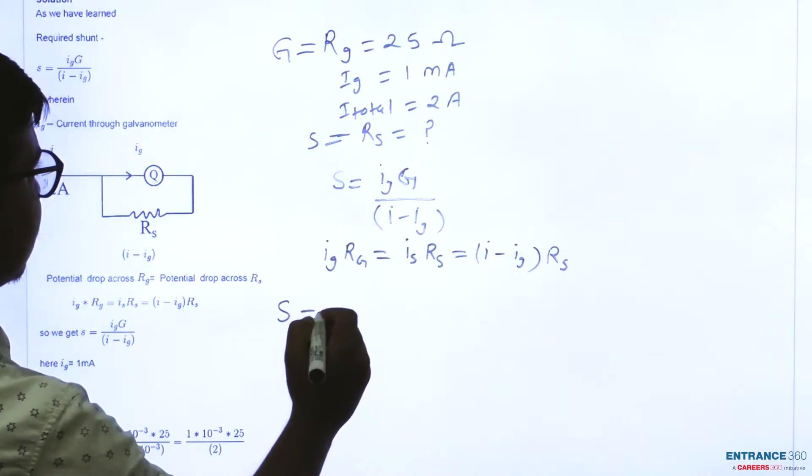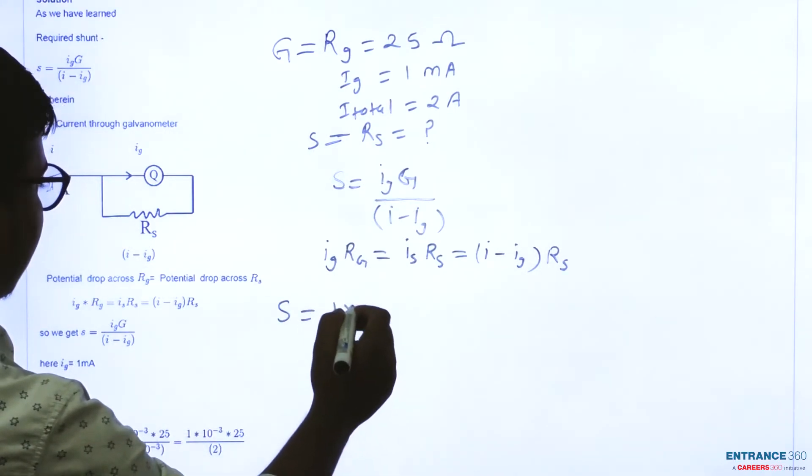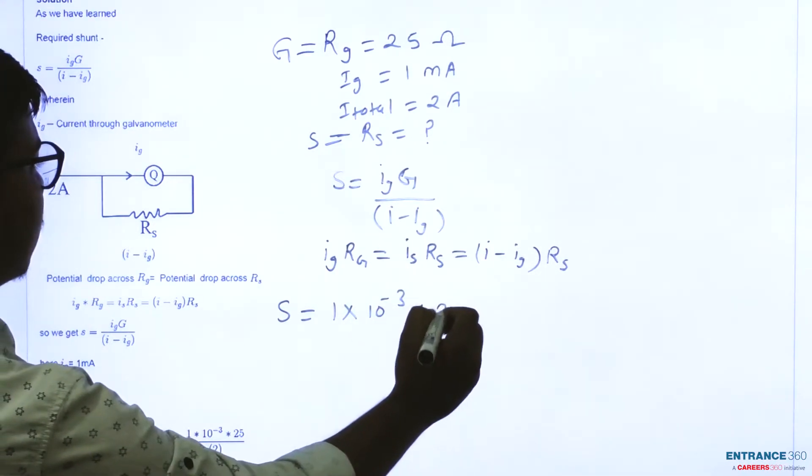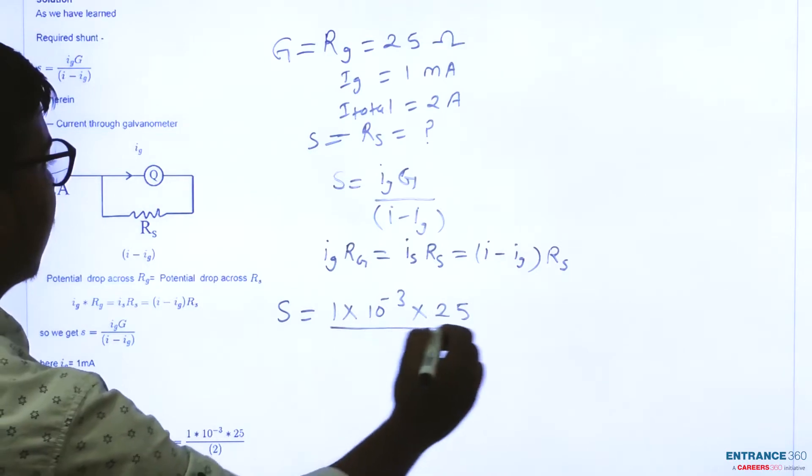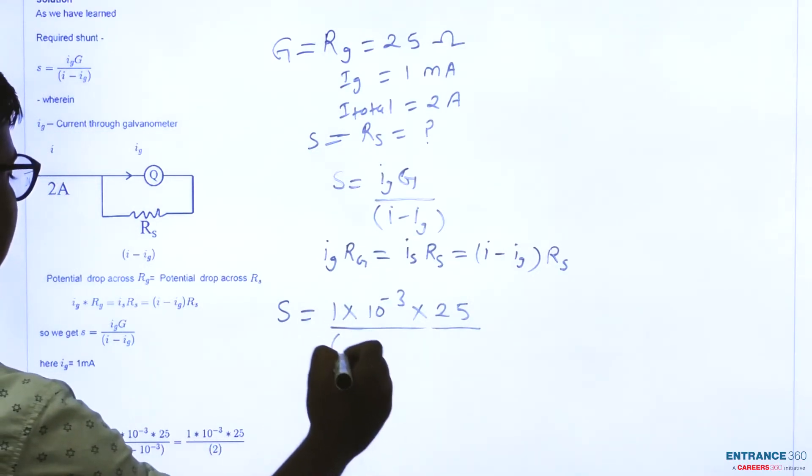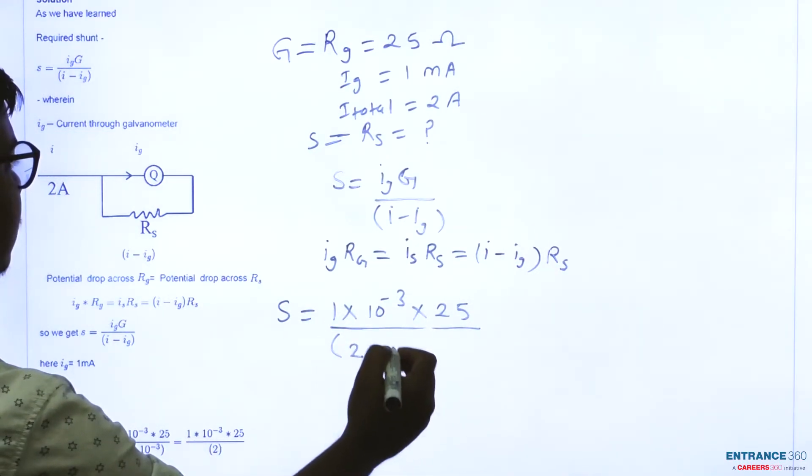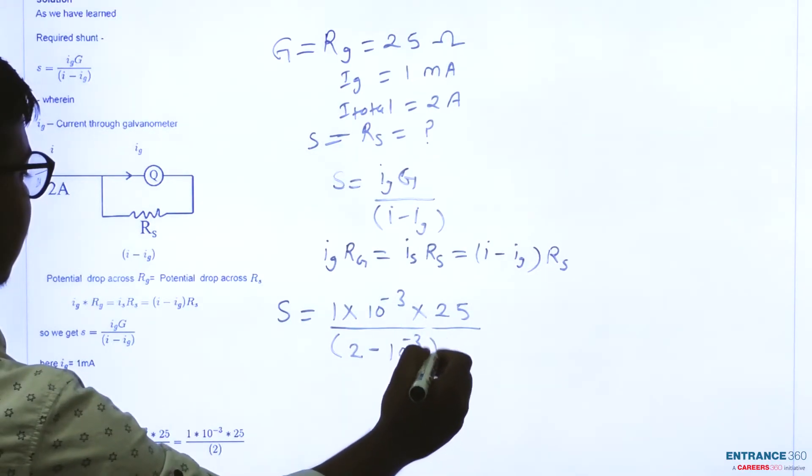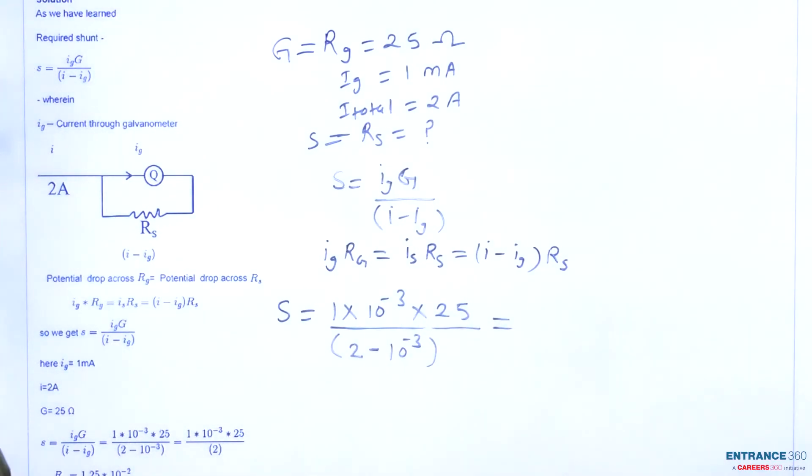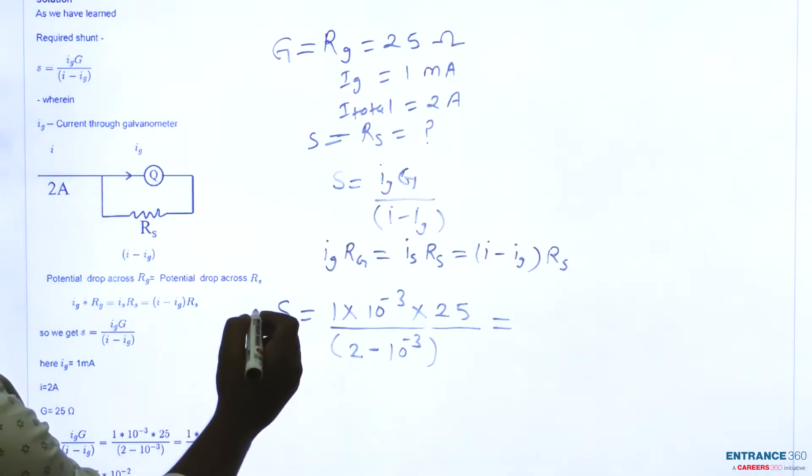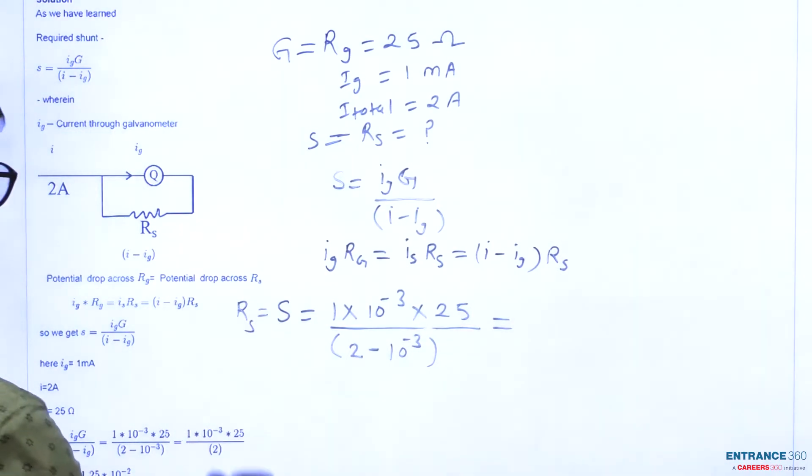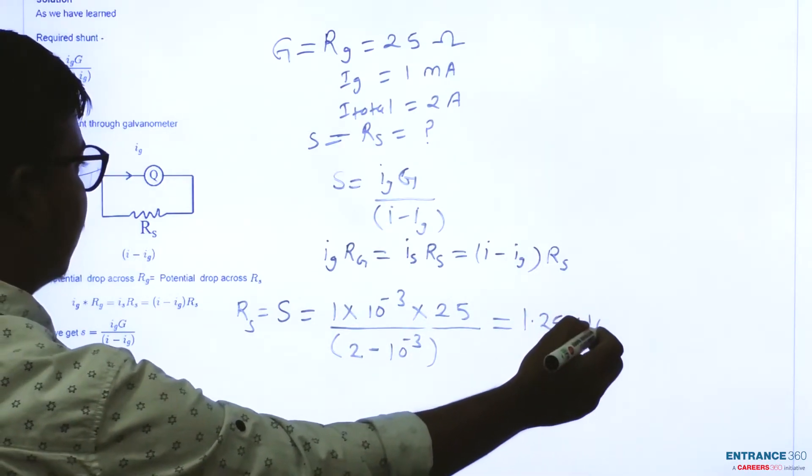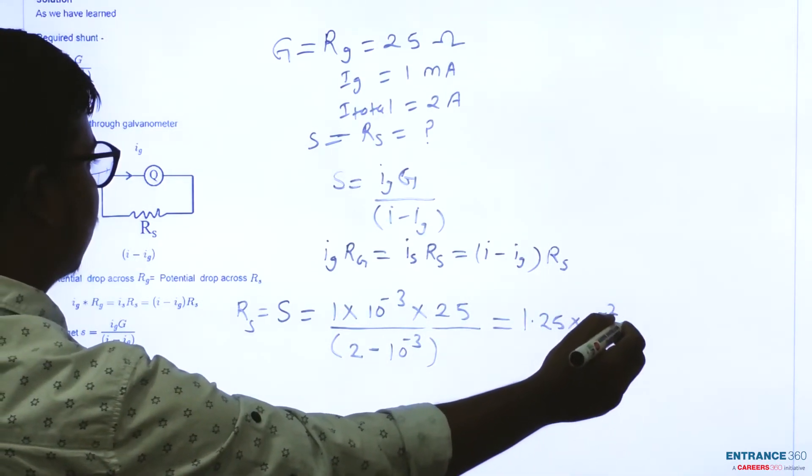So S will be simply Ig, that is 1 into 10 to the power minus 3, into value of G, that is 25 Ohm, upon I, I is 2 ampere, minus Ig, that is 10 to the power minus 3 ampere. So after solving, we get value of S or value of Rs as 1.25 into 10 to the power minus 2 Ohm.